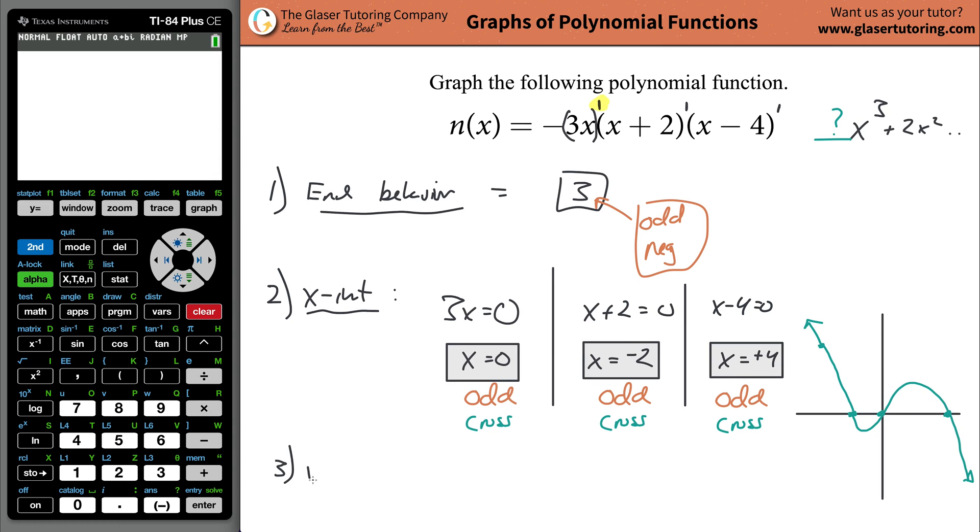The last bit of information we can solve for is the y-intercept. The way to figure out the y-intercept is you take your function here, rewrite it. Instead of n of x, you can just write y. So y equals negative 3 times x, multiplied by x plus 2, multiplied by x minus 4. All you're going to do is start plugging in zeros for x. It's going to be 0 plus 2, 0 minus 4. When you do this math out, it's a negative 4 multiplied by a positive 2, multiplied by a negative 3, multiplied by 0. The whole thing's going to be 0. And it's going to cross that origin.